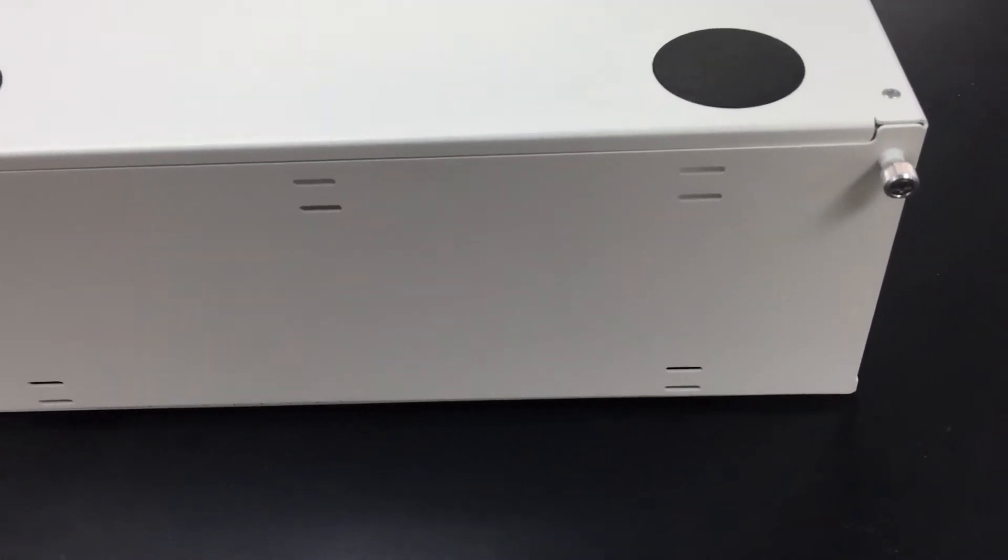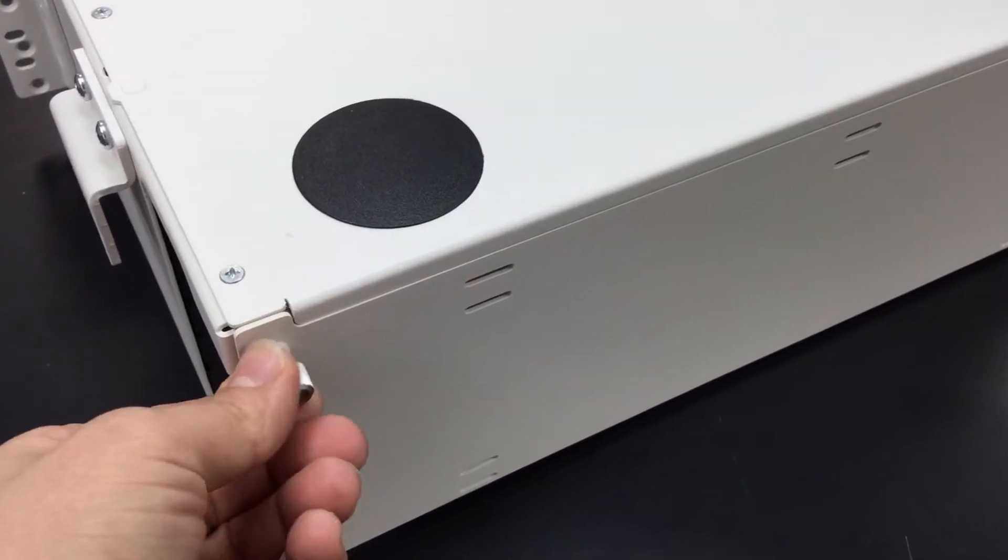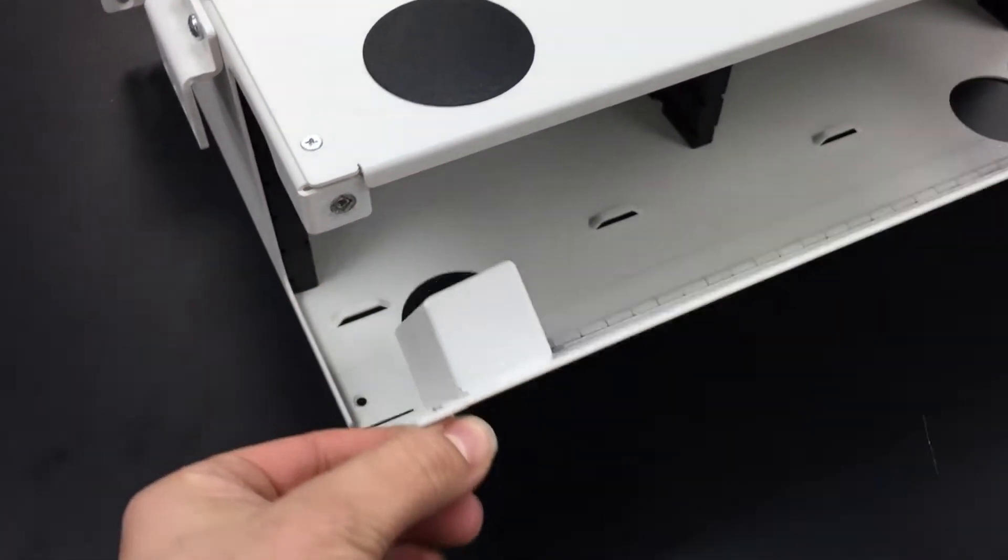Open the rear door of the UCS-600 chassis by loosening the thumbscrews to lower the hinge door.